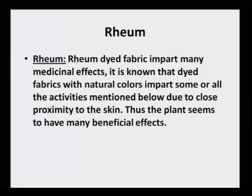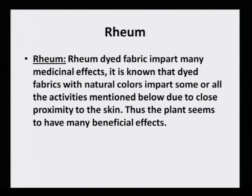Coming to the last dye of this series — I had chosen six main dyes, all varying in color: indigo blue, manjistha red, catechu brown, punica yellow, lac which is purplish, and now rheum which is greenish yellow. Rheum dyed fabric imparts many medicinal effects too. I chose these because they are the common colors that are used — that is why I chose them for the understanding of their medicinal property.